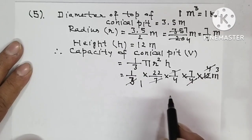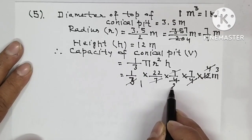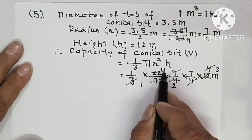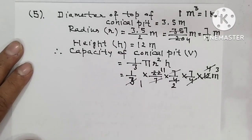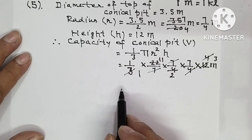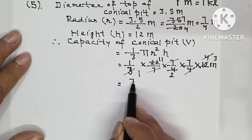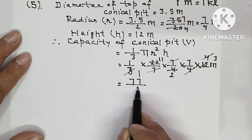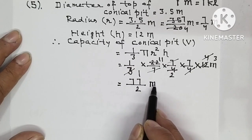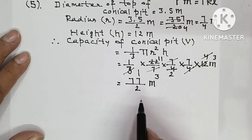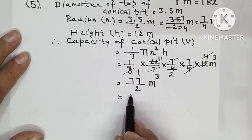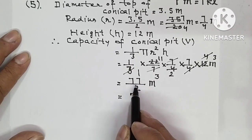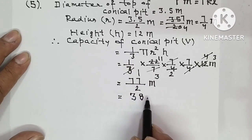7 and 7 cancel. 3 ones are 3, and 3 fours are 12. One 4 and one 4 can be cancelled out. 2 twos are 4, and here is 11. So this is 11 into 7, which is 77 upon 2 meter cube.